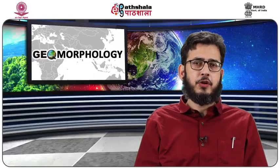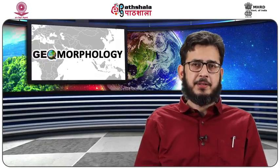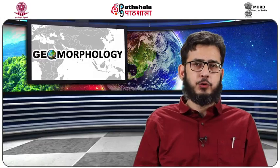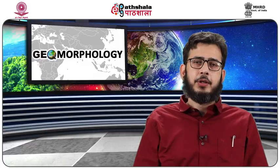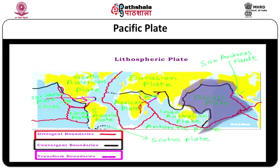Let us see the distribution of major and minor plates in the world. The lithosphere is divided into six large and many smaller plates. Except for the Pacific plate, the remaining major plates are named after the continents embedded in them. The Pacific plate is the largest and is almost oceanic in character. Many plates are comprised of both continental and oceanic crust.